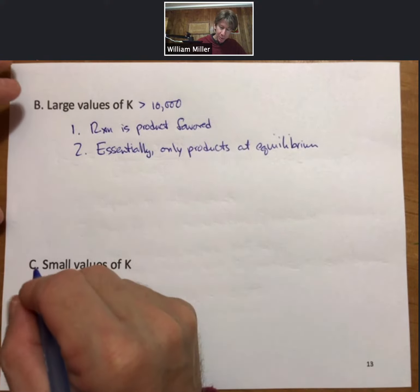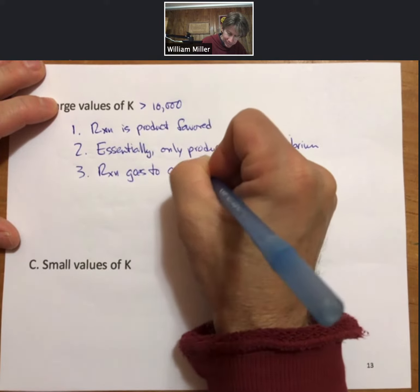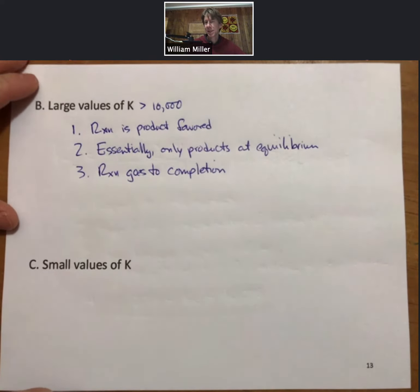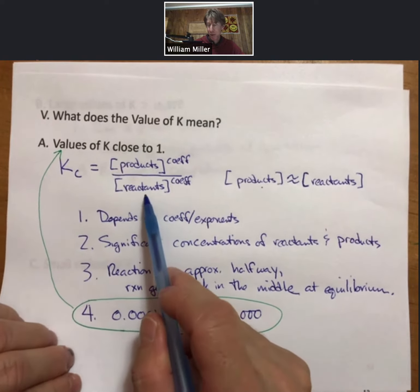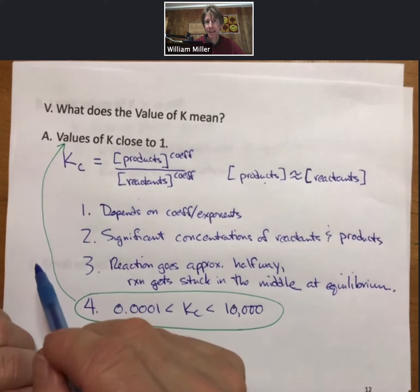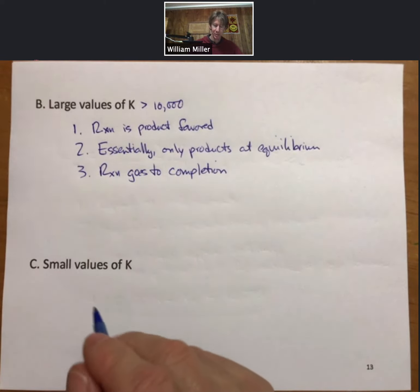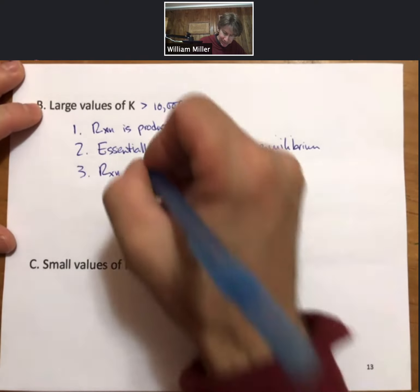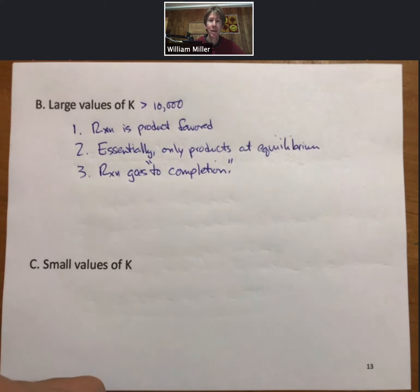The reaction goes to completion. We have to be careful here because no matter what, the reactants are in the denominator. So the reactants cannot go to zero unless K or KC is infinite, which is never true. It can be functionally or close enough to being true. It goes to completion, it may appear to go to completion, but it may only go 99.999999999999% there, which is close enough for me.